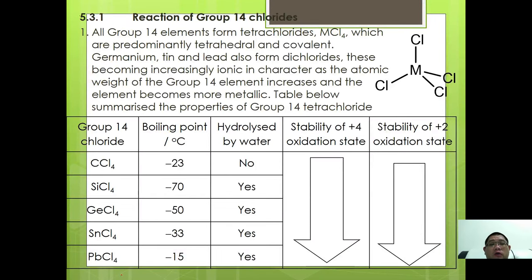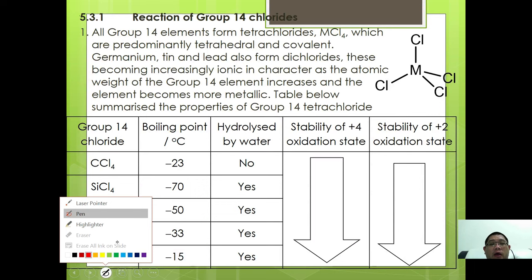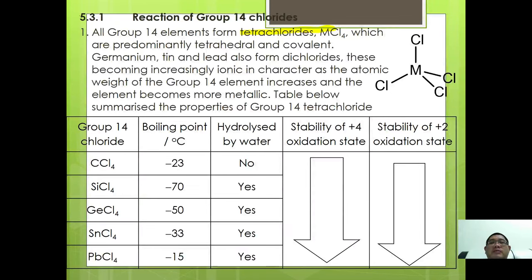All Group 14 elements form tetrachlorides MCl4, which are generally simple covalent molecules held by weak Van der Waals forces. However, germanium, tin, and lead also form dichloride MCl2. When going down Group 14, they become more ionic in character as the atomic size increases.